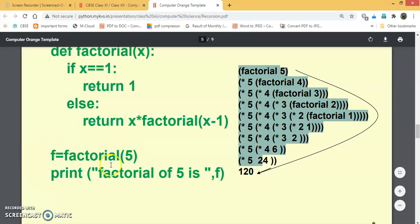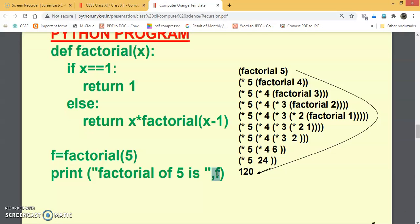When this factorial breaks, then return 1, and this return will go to each call. Then your value of 5, which is 120, will be stored in f. Then you have to print f. And the factorial of 5 is equal to 120. That is how we can use the recursion method.